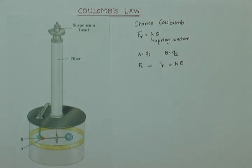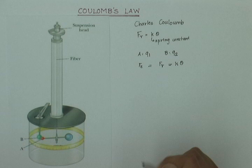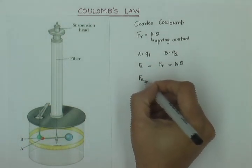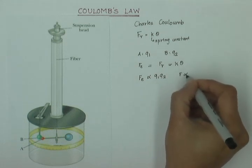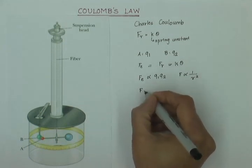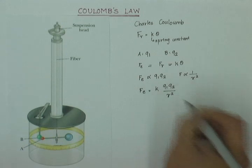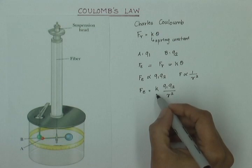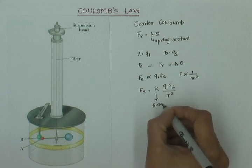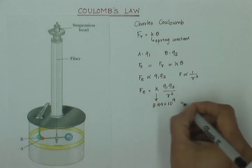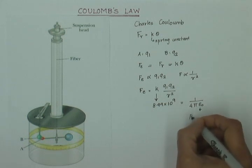Coulomb did this experiment for a lot of charges, a lot of values of Q1 and Q2 and for a different range of separations between them. And he found out that electrostatic force is proportional to the magnitude of both the charges. It is inversely proportional to the square of distance between them. And so, he could write this as FE is equal to K Q1 Q2 over R square. By doing a lot of experiments and by plotting a graph, he found out K to be equal to 8.99 into 10 raised to 9. And as we shall later see, we can also write this as 1 over 4 pi epsilon 0 where epsilon 0 is the permittivity of free space.